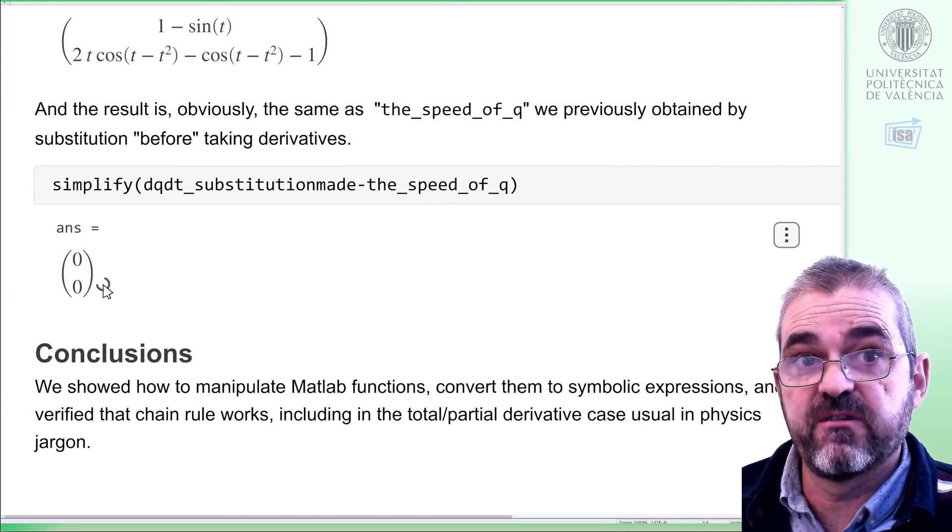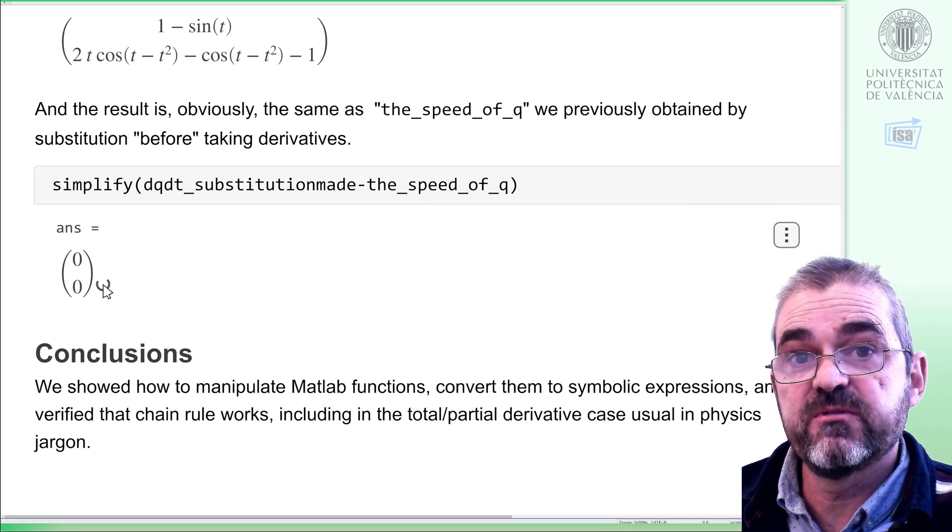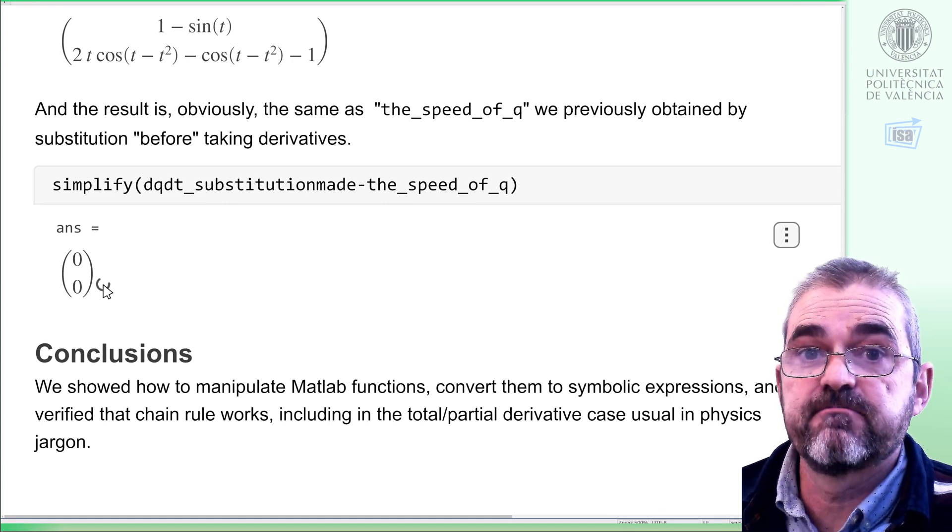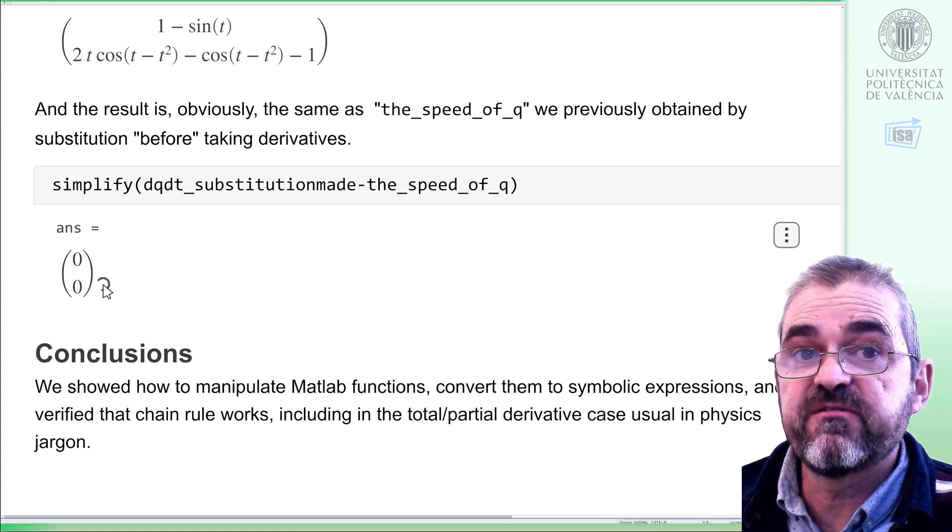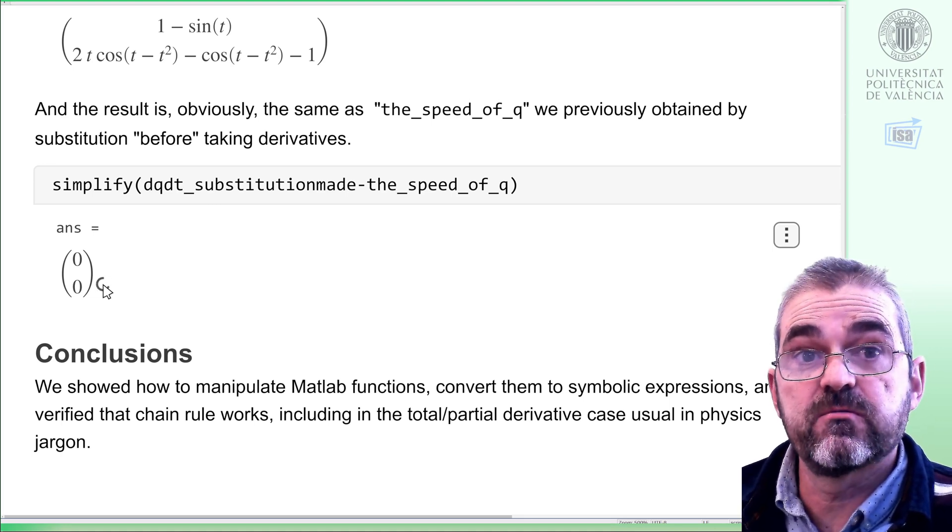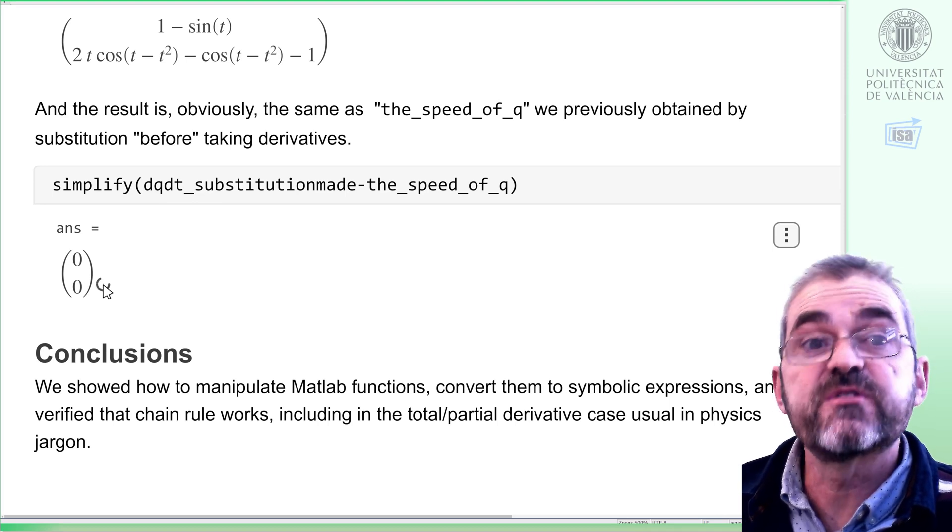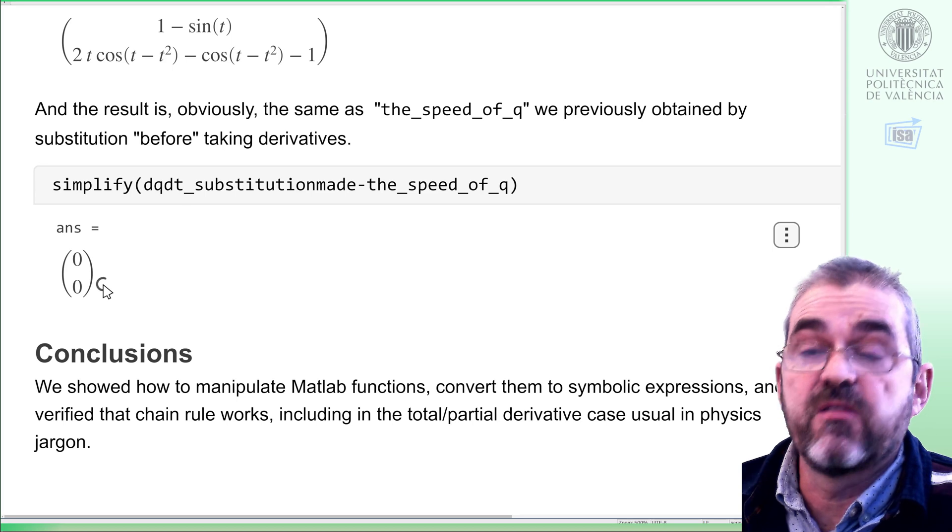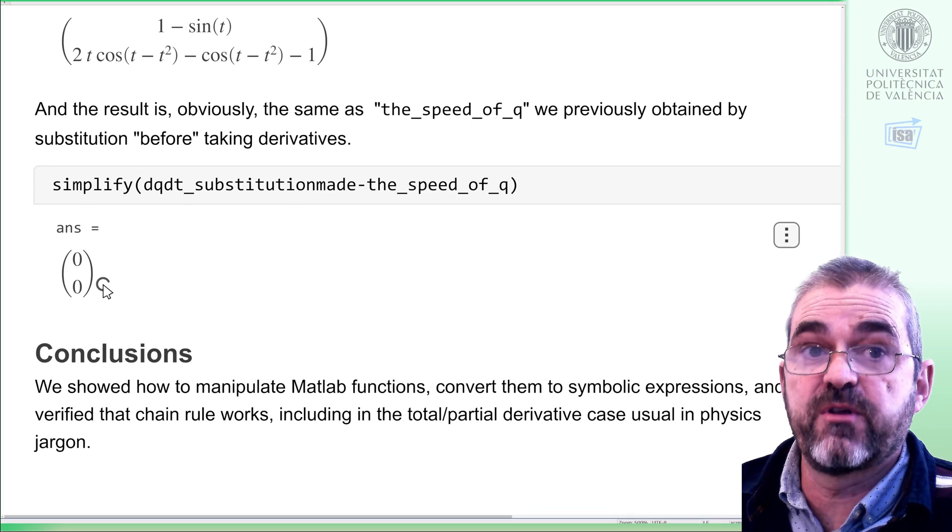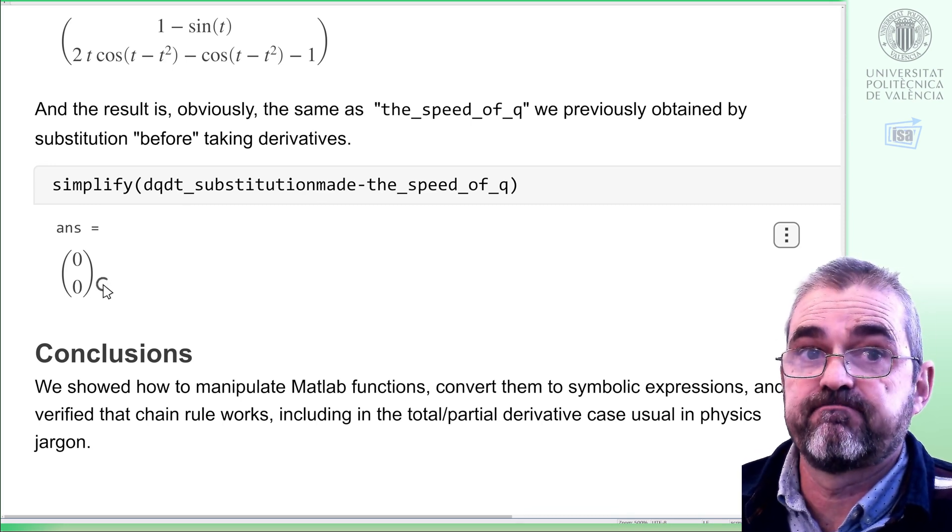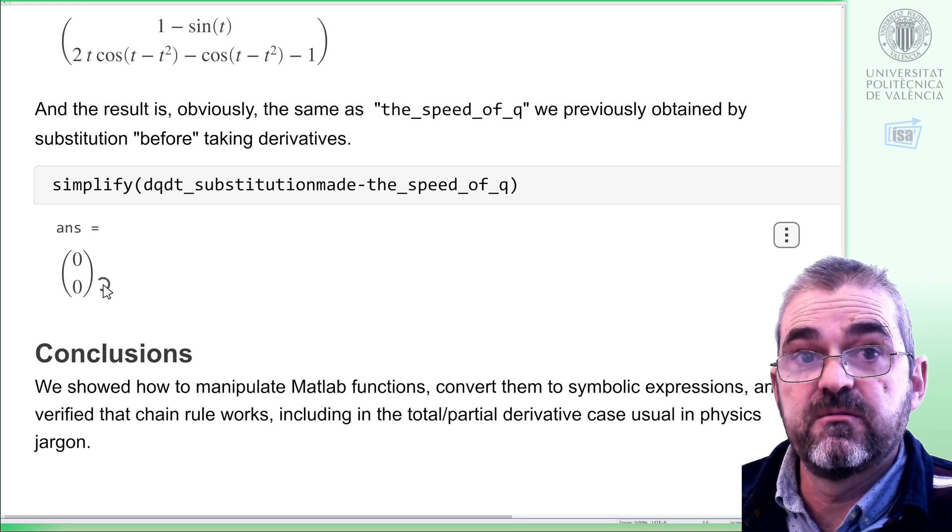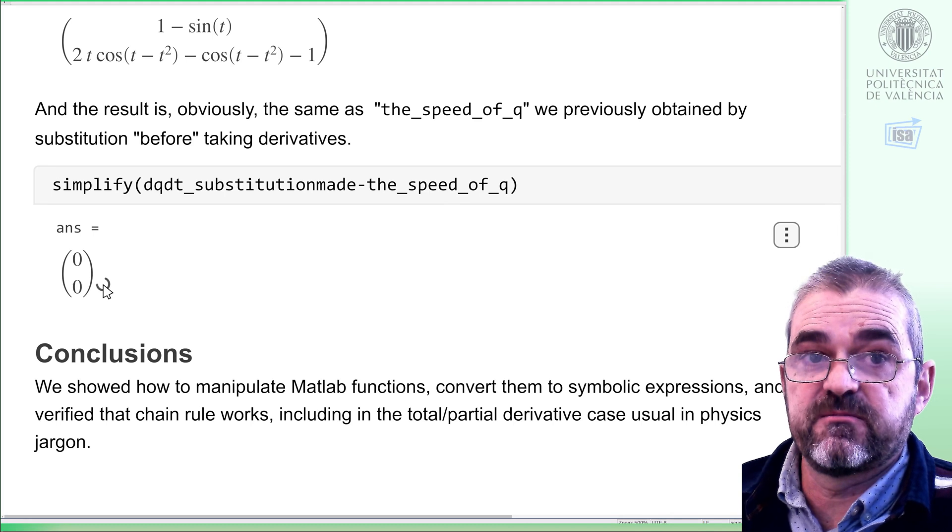So, we will conclude the video here. In this video, we have shown how to generate symbolic expressions from numerical functions, we have shown the use of the diff command and the Jacobian command, we have first shown that chain rule applies so that substitution first, i.e. composition, and then partial derivatives gives the same result as partial derivatives first, product of Jacobians, and then substitution.